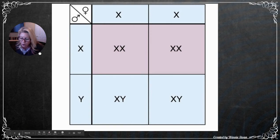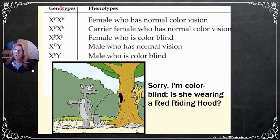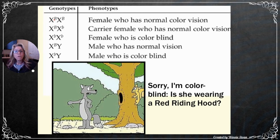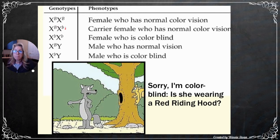Example of an X-linked trait: color blindness. Females have two shots at a good X chromosome copy; males have only one. Using the letter B for normal vision (dominant) and little b for color blindness (recessive): for a female to be colorblind she needs two little b alleles; a male is colorblind if his single X carries the little b allele. Males cannot be carriers — they either have it or don't. Females can be carriers with normal color vision.